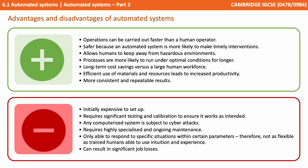As with all things, there are some disadvantages. A lot of automated systems are initially very expensive to set up. They require significant testing and calibration to make sure they work as intended and accurately, and any computerized system is always subject to cyber attacks. All automated systems require highly specialized and ongoing maintenance. They are only able to respond within given parameters, and are therefore not generally as flexible as trained humans who are able to use intuition and the benefit of experience. Automation can also result in considerable job redundancies, which is covered further in videos on robotics.